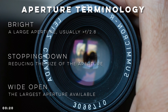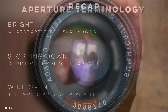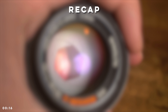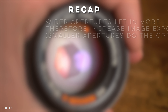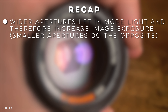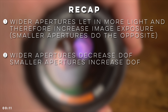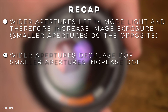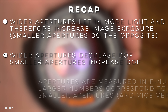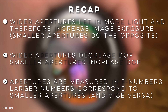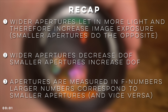Quickly recapping: aperture controls how much light passes through the lens and into the camera. Wider apertures let in more light and increase exposure while decreasing depth of field. The opposite is true for smaller apertures. Apertures are measured in F numbers or F stops, with smaller numbers representing larger apertures and larger numbers representing smaller apertures.